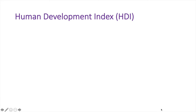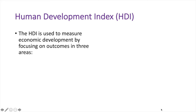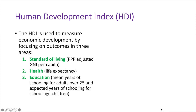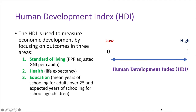The Human Development Index was developed by Pakistani economist Mahbub Al-Haq as part of his work supporting the United Nations Development Program. The HDI measures economic development by focusing on outcomes in three areas: the standard of living as measured by PPP-adjusted GNI per capita, health as measured by life expectancy, and education as measured by mean years of schooling for adults over 25 and expected years of schooling for school-aged children. The index value ranges from 0 to 1, with higher values indicating higher development. HDI does have its limitations but provides more insight than national income statistics alone.